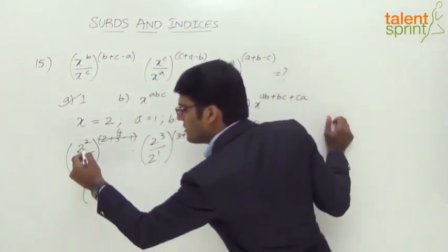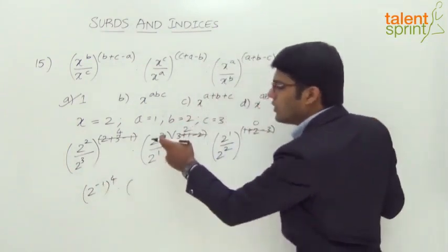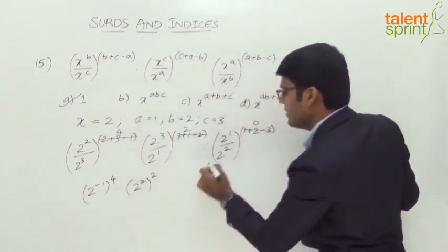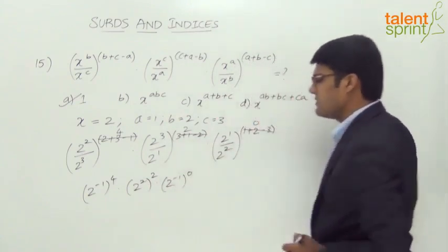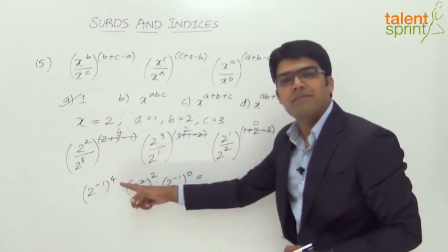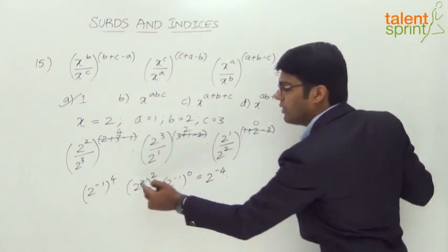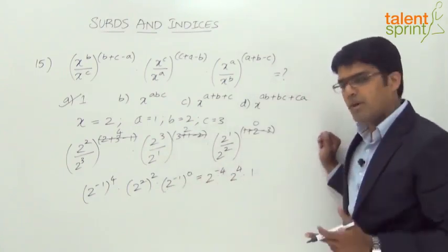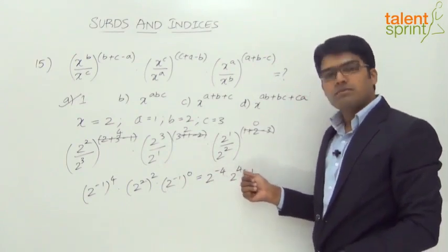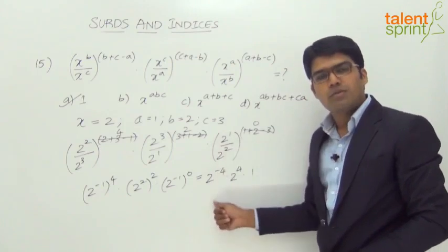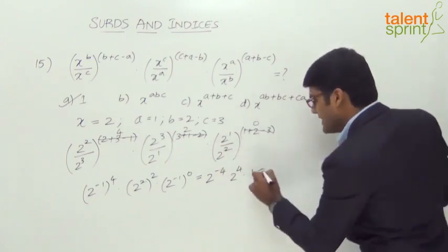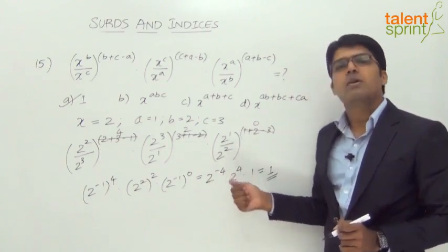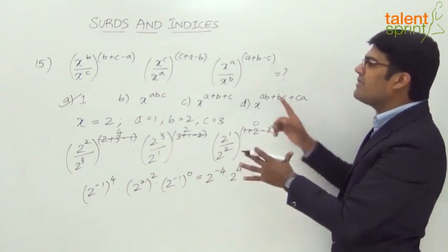Simplifying further: 2^(−4) × 2^4 × (2^(−1))^0. Anything to the power of 0 is 1. So we get 2^(−4) × 2^4 × 1. The bases are equal, so add the powers: −4+4=0, giving 2^0=1. Alternatively, 2^(−4) equals 1/16, and 1/16 × 16 = 1. By substituting these values in the given expression, we get 1.